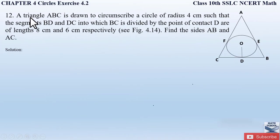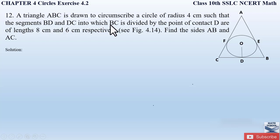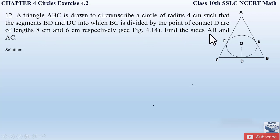Question number 12 from exercise 4.2 chapter 4 circles says: a triangle ABC is drawn to circumscribe a circle of radius 4 cm such that the segments BD and DC into which BC is divided by the point of contact D are of length 8 cm and 6 cm respectively as shown in the figure. Find the sides AB and AC.